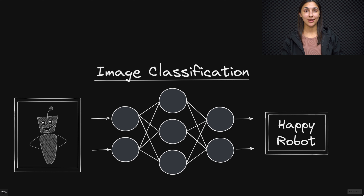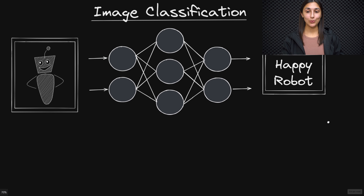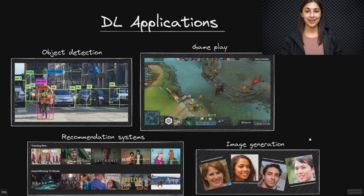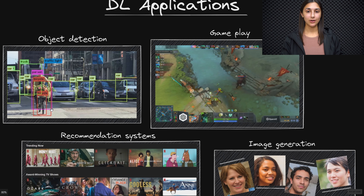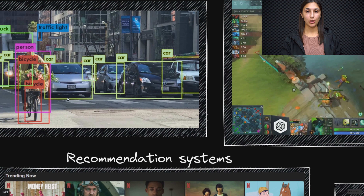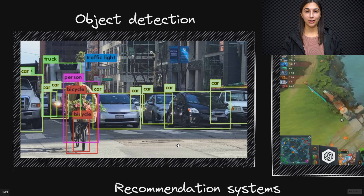But image classification tasks are only the tip of the iceberg for the field of deep learning at large. We're already able to do so much with deep learning technologies, and we'll be able to do even more in the future. Here we have just a few popular applications of deep learning that already exist in our world today. For example, here in this first image, we have an example of object detection, where the deep learning algorithm is detecting all of the different types of objects in an image. Self-driving cars make use of this technology already to detect the different objects in their field of view as they're driving.